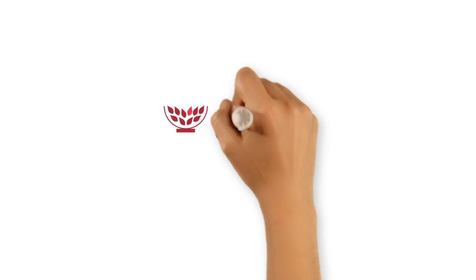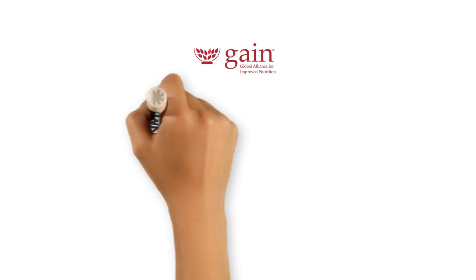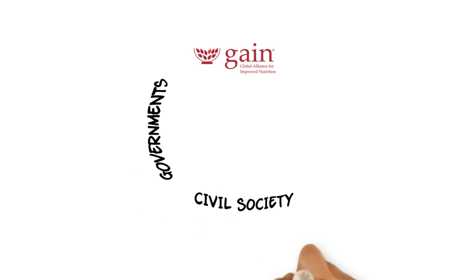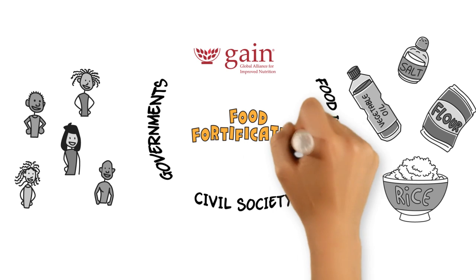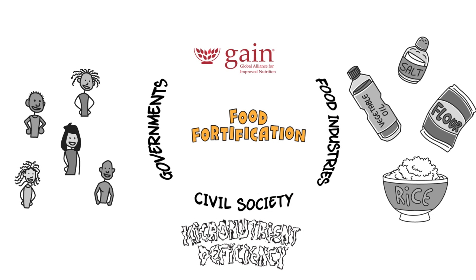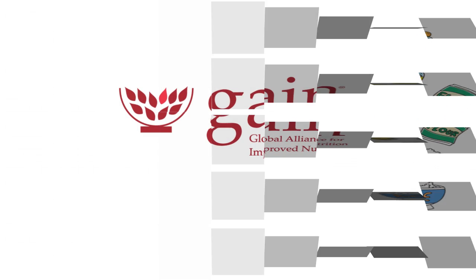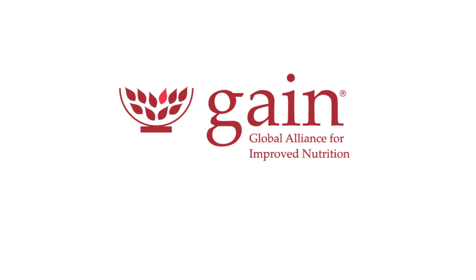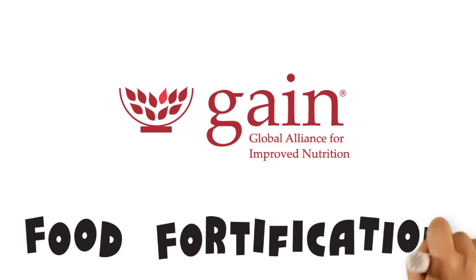Since its inception in 2002, the Global Alliance for Improved Nutrition has been working with governments, civil society, and food industries around the world to invest in food fortification in order to reach those living on less than two U.S. dollars a day through the existing food supply to live healthy, productive lives. Together with our partners, we're building a platform for future improved health. That way, we all gain.